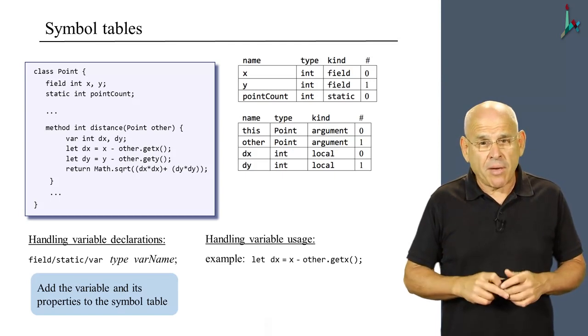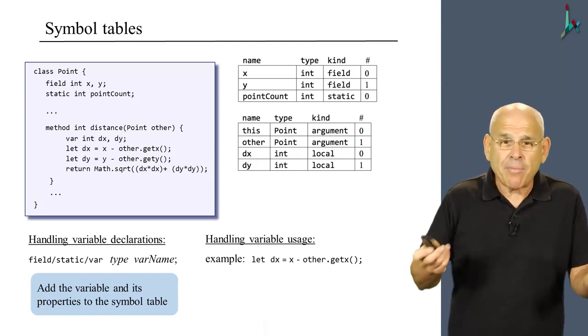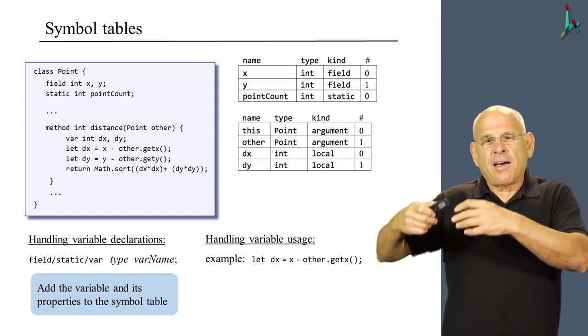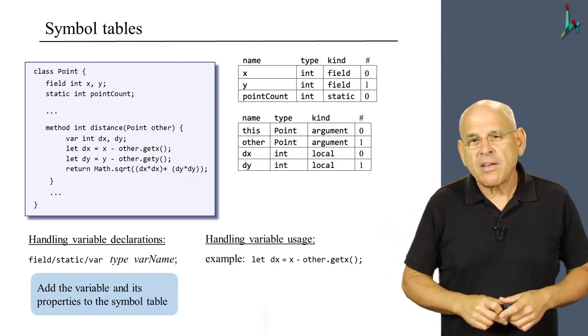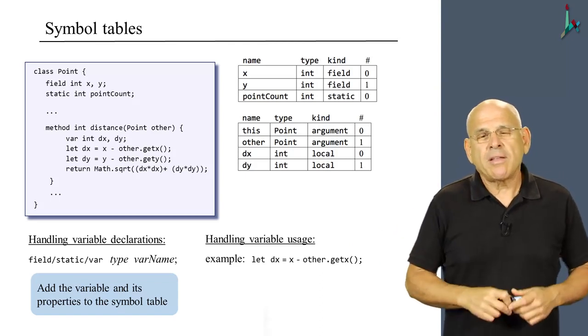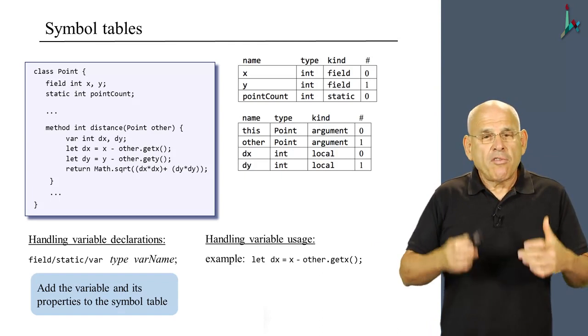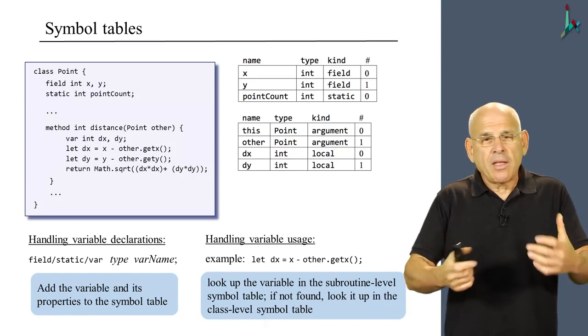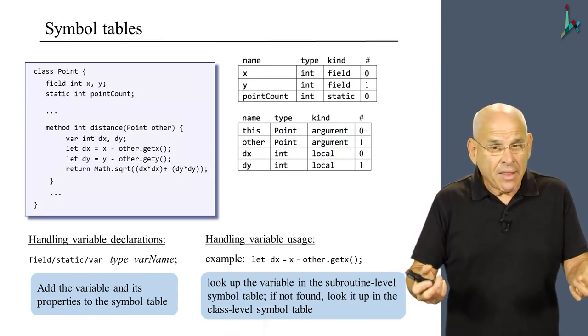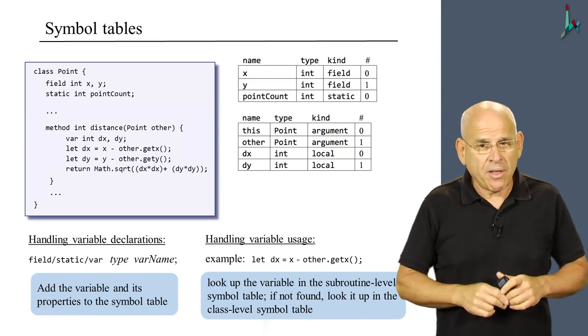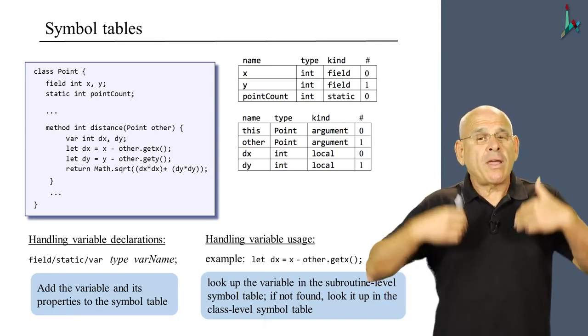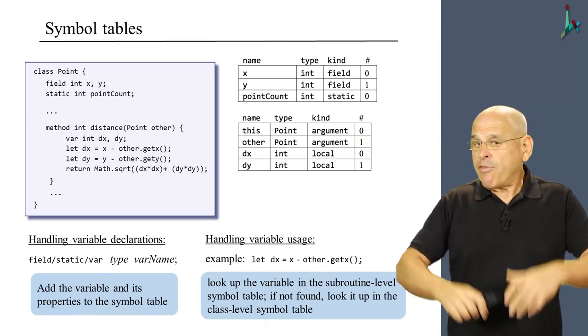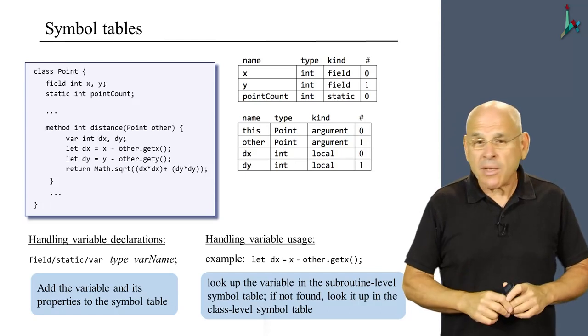So it's a relatively simple task to handle. What about using variables within the context of expressions or statements? Like let dx equals x minus applying the get method to the other object. Now, how should we handle the variables in this example? Well, here's what we do. For each variable that appears in the source code, we have to look up this variable in the subroutine level symbol table. If we find it there, fine, we know which properties we have to use. If we don't find it there, we revert to looking it up in the class level symbol table. And if we don't find it there either, we can conclude that this variable is undefined. We can throw an error message.